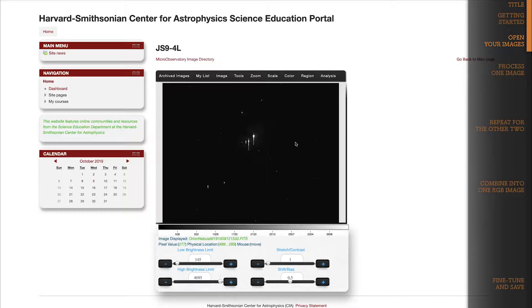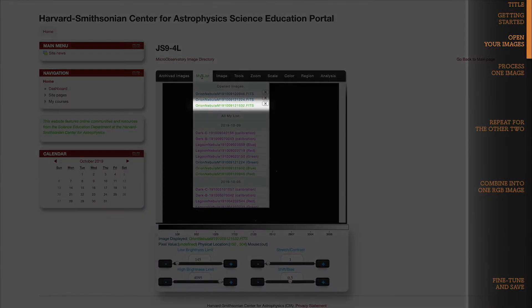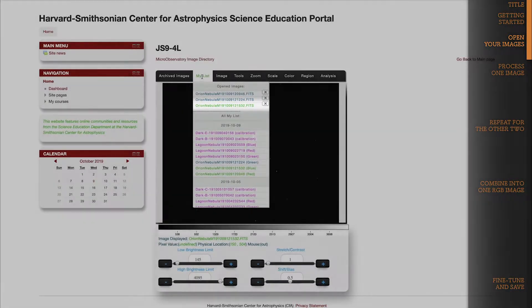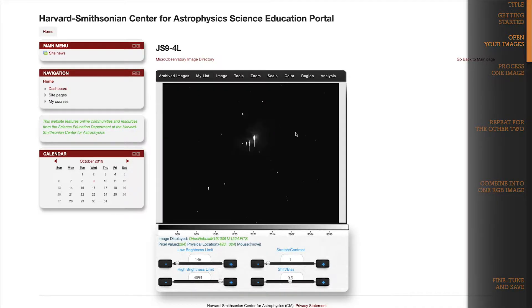However, even though all three are open, we can only edit one image at a time in JS9. Whichever image is in front, that's the one you can edit. Just click on the My List dropdown again. My List tells you which image is in front by highlighting it in green. And if you want to switch images, just click on one of the other images in this dropdown. Easy.